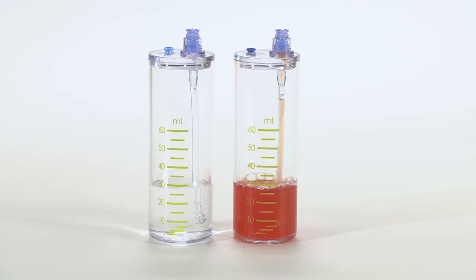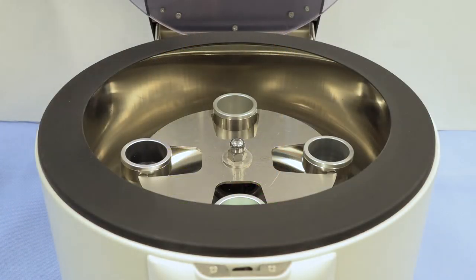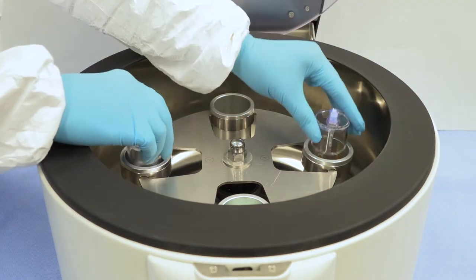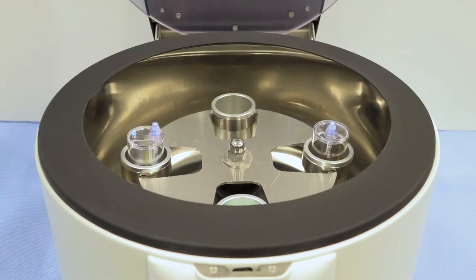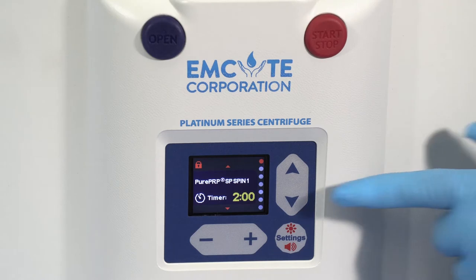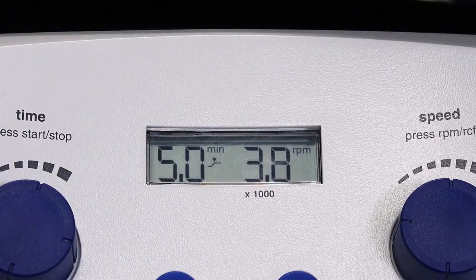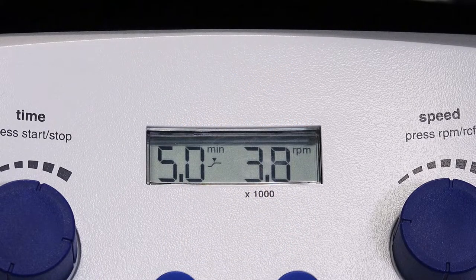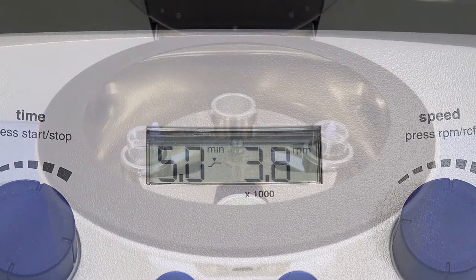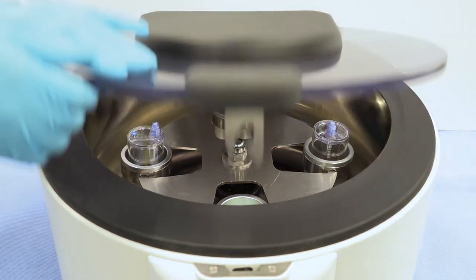Counterbalance the accessory with equal volume and place back into the centrifuge rotor at opposite ends. Set the Platinum Series centrifuge at Pure PRP SP SPIN 2, or set the Executive Series centrifuge for 5 minutes and 3800 RPMs. Close the centrifuge lid and press Start.